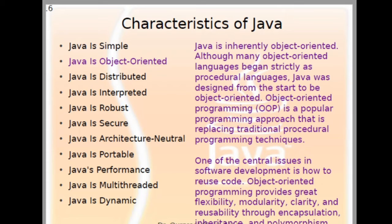Java is object oriented. Object oriented means everything we want to do must be centered on objects. Java is inherently object oriented. Although many object oriented languages begin strictly as procedural languages, Java was designed from the start to be object oriented. Object oriented programming is replacing traditional procedural programming. Java being object oriented provides great flexibility, modularity, clarity, and reusability through encapsulation, inheritance, and polymorphism.